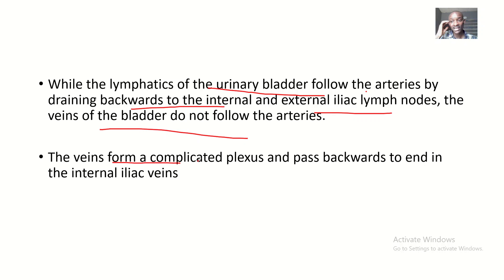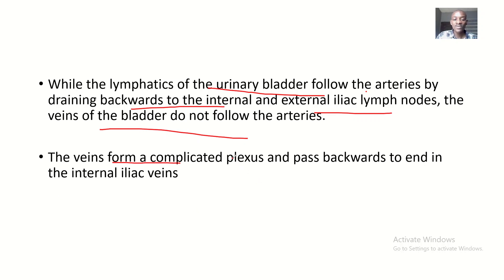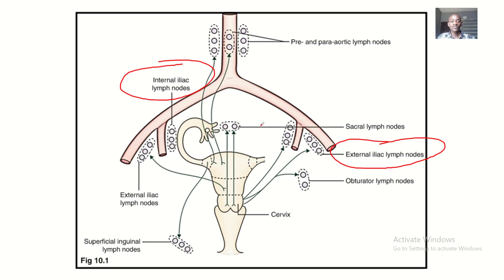To summarize: the lymph nodes follow the arterial supply, while the veins do not follow the arterial supply. Instead, the veins form a complicated plexus and drain back into the internal iliac veins. We have similar vessels around the urinary bladder known as the external iliac artery.